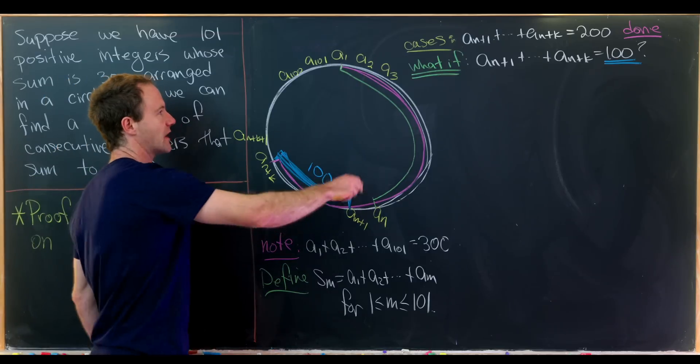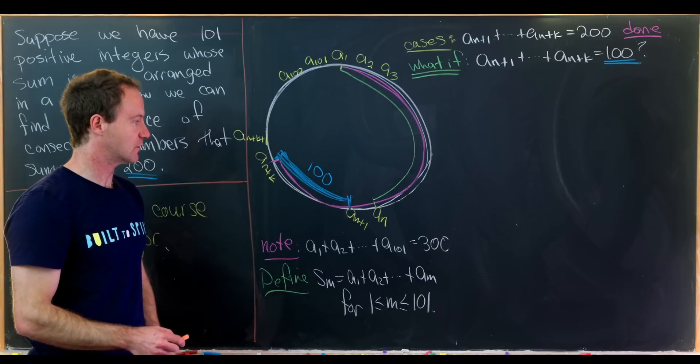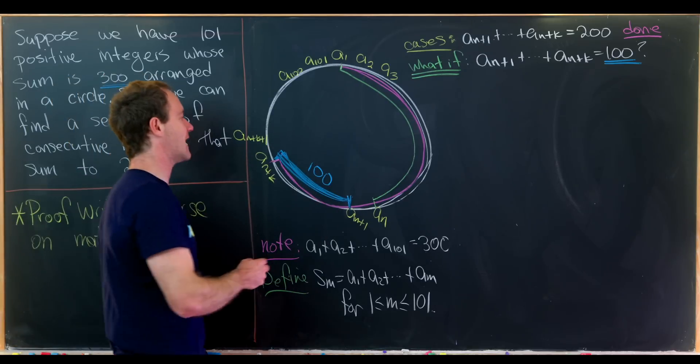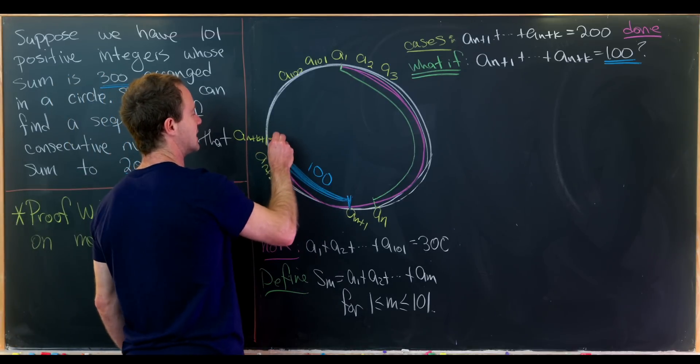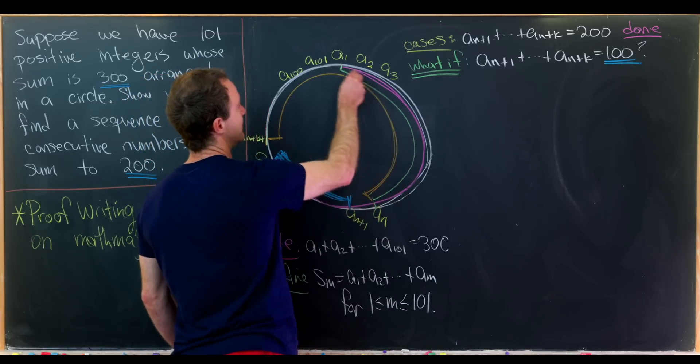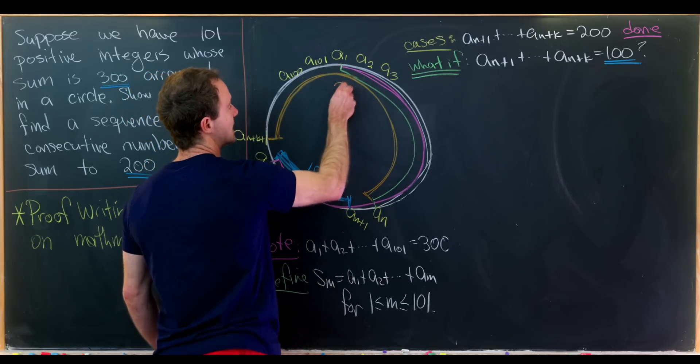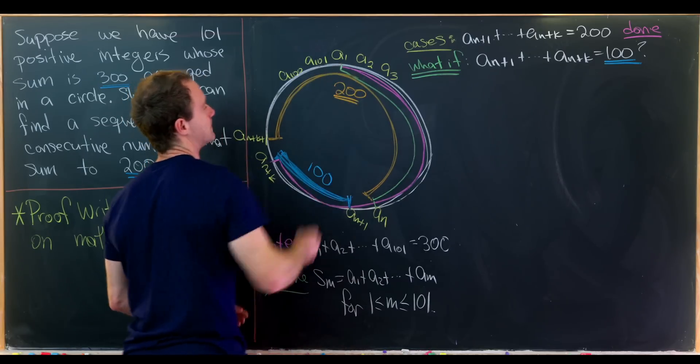But let's recall that the sum all the way around equals 300. So if the sum all the way around equals 300, whereas the sum along this arc equals 100, then that means the remaining bit equals 200. So we have the sum all the way around, maybe the long way, which goes through this turnover point equals 200.